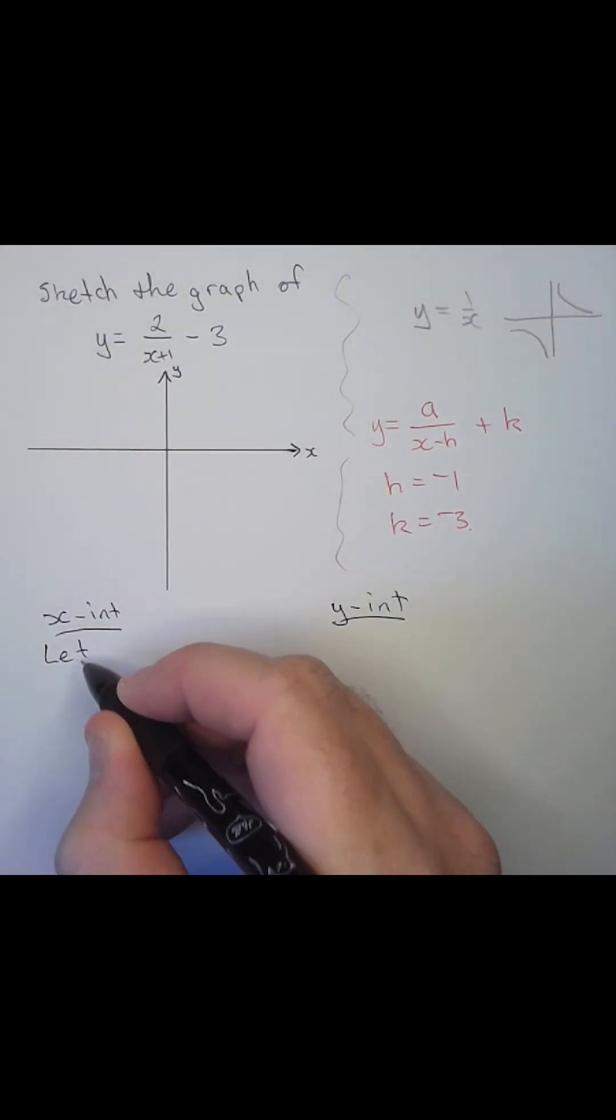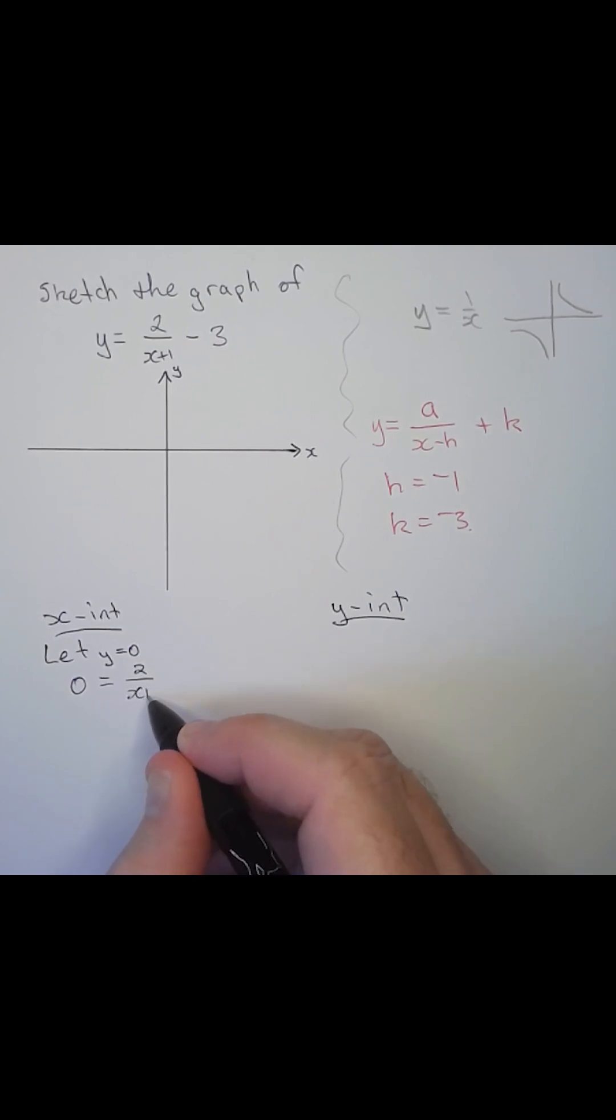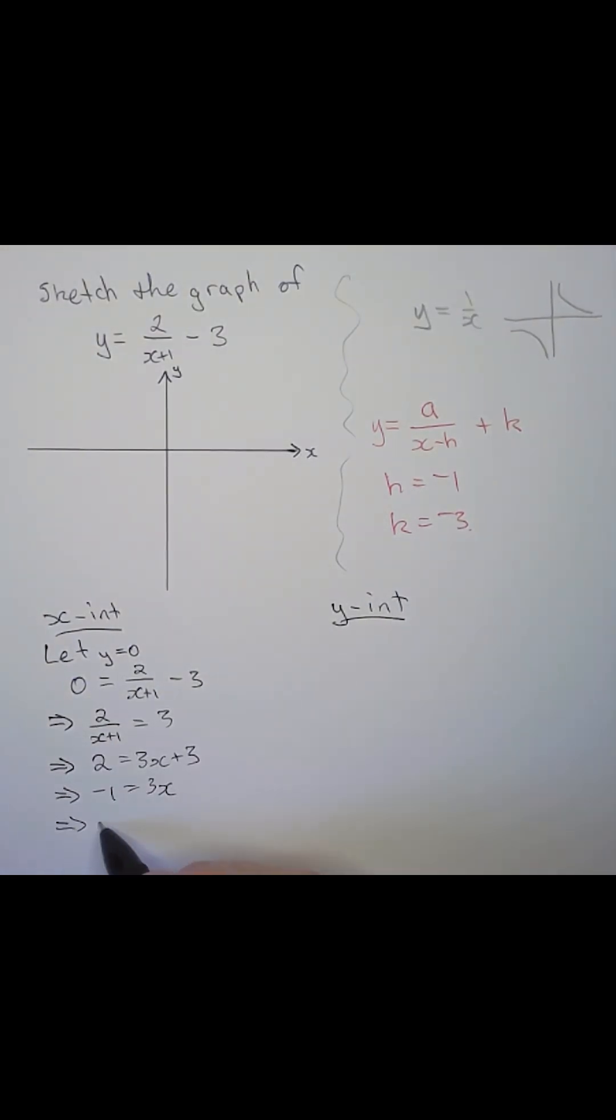To find the x-intercept, we're going to let y equal to 0. When y is 0, we have 0 equal to 2 over x plus 1 minus 3. We find x equal to minus 1 on 3.